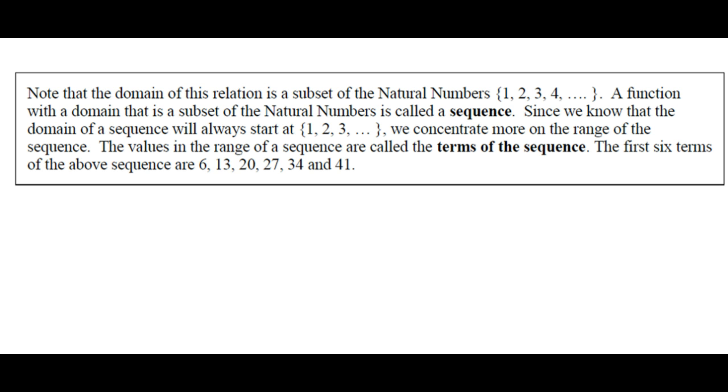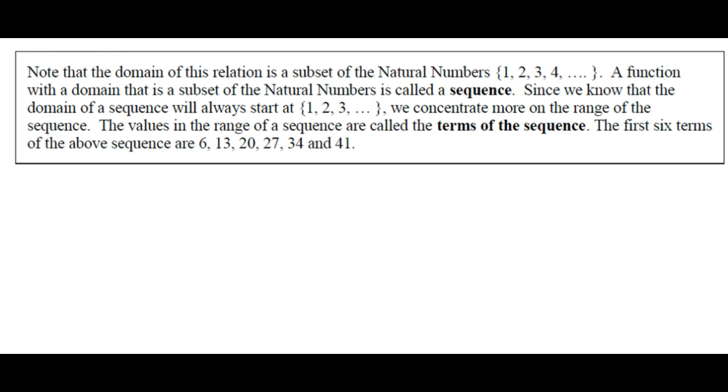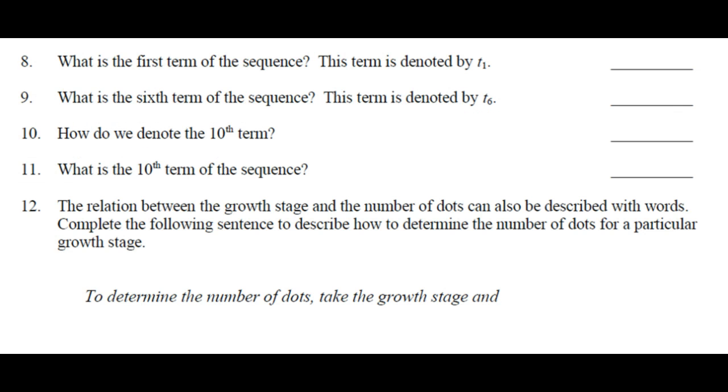The domain simply tells us which term. If you're looking at the ordered pair 1, 6, it says the first term is 6. If you're looking at the ordered pair 10, 69, the 10th term is 69, right? What is the first term of the sequence? This term is denoted by T sub 1. T1. What's T1? 6.